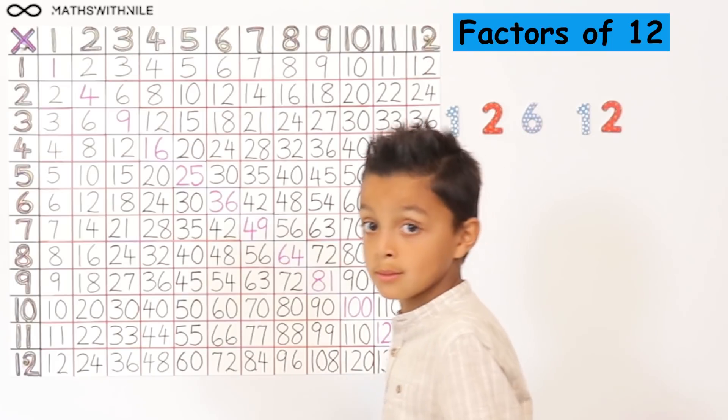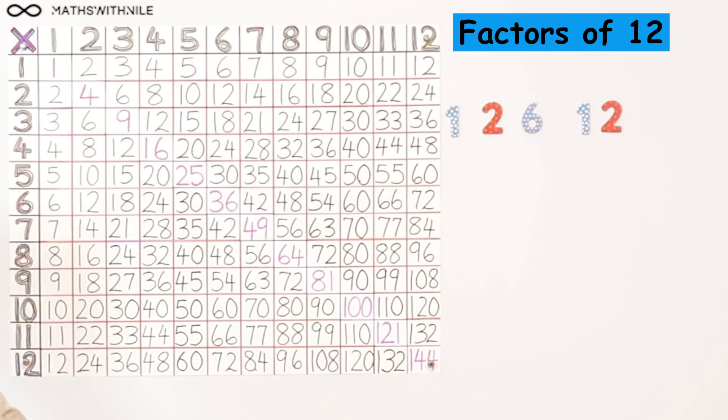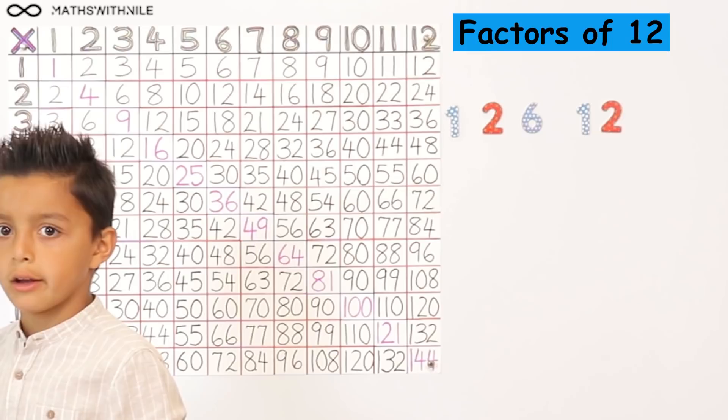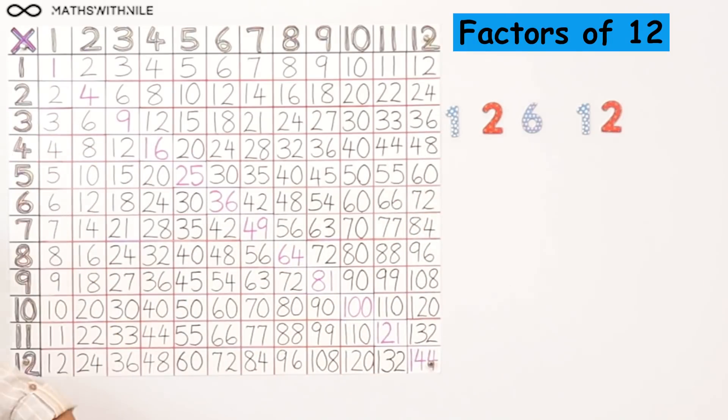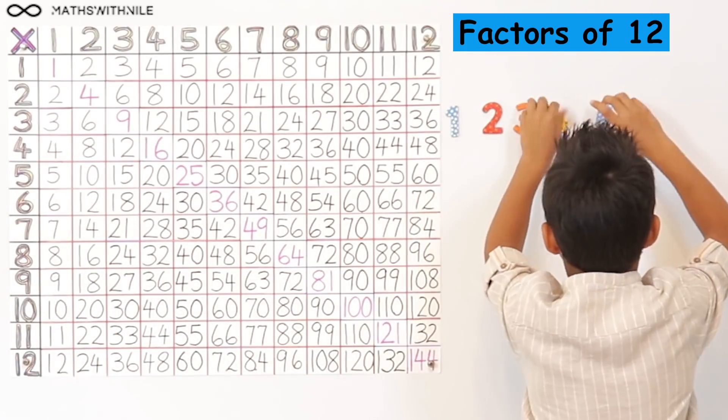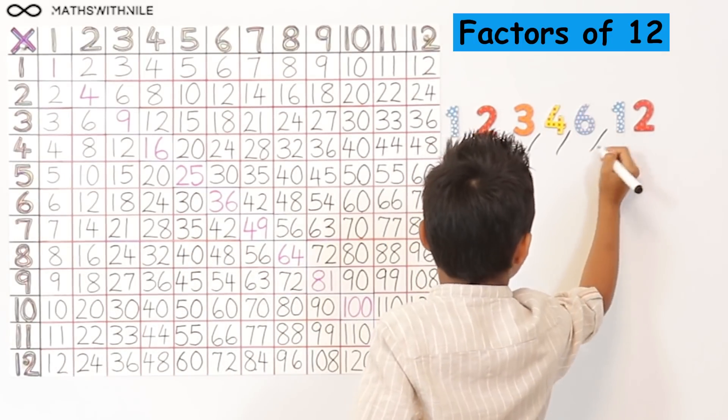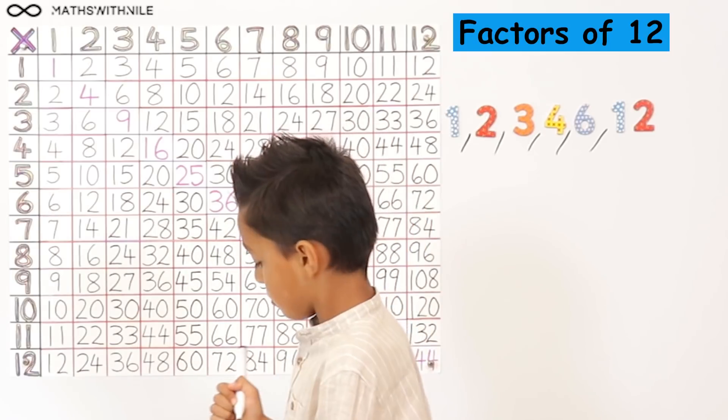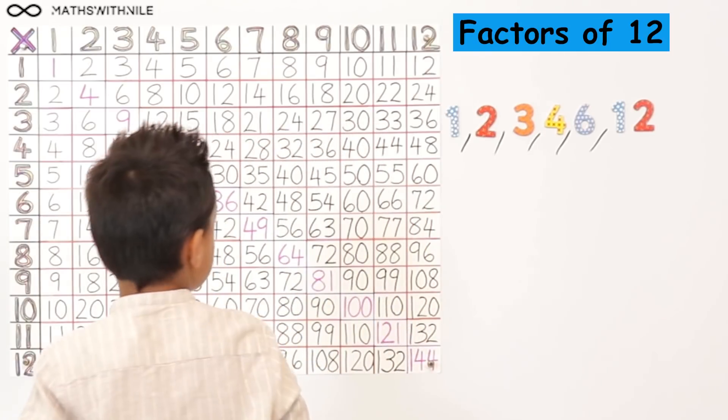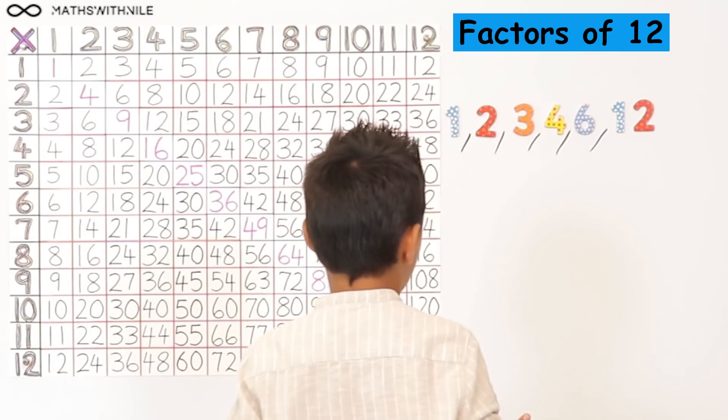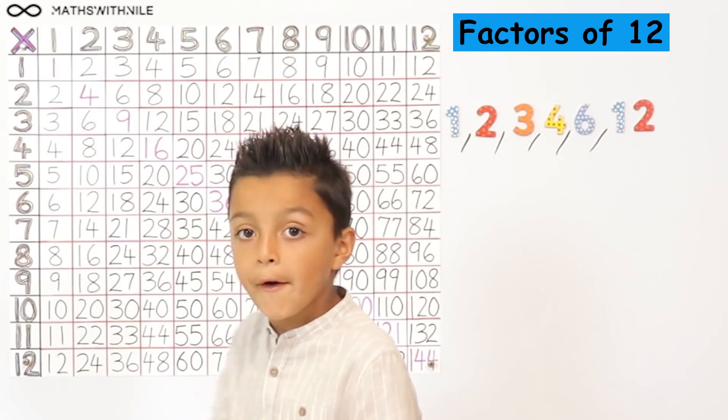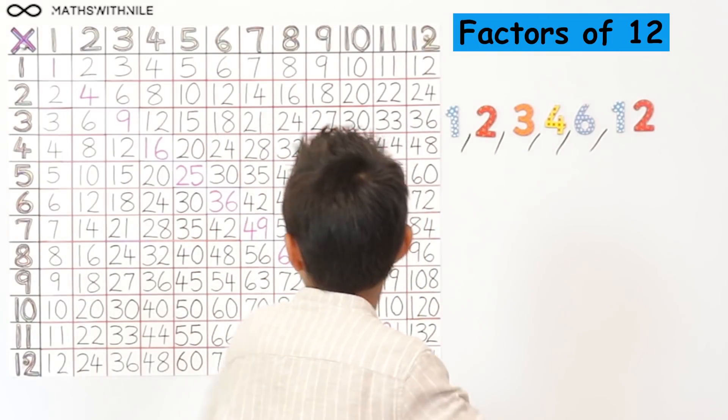And 4. And 4. How many times does 4 go into 12? 3. Okay, so what are the factors of 12 now? 1, 2, 3, 4, 6 and 12. Very good, because all of these numbers can go into 12.